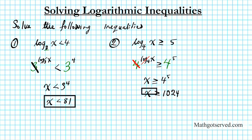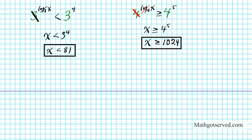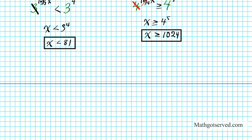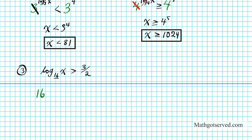Now let's move along to question number 3. We have the inequality log base 16 of x is greater than 3 over 2. The base here is 16, so we're going to follow the same procedure. I'll put a big 16 on both sides — exponentiating both sides using 16 as the base. So we have log base 16 of x is greater than 16 to the 3 halves.